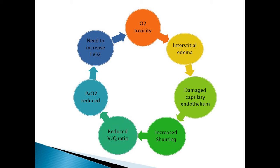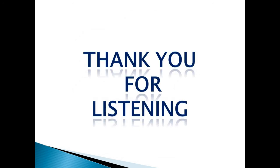Due to the V/Q mismatch, the partial pressure of oxygen (PaO2) is reduced. To compensate, as seen on arterial blood gas (ABG), the FiO2 — the fraction of inspired oxygen — needs to be increased. However, increasing FiO2 again leads to oxygen toxicity and hypoxemia, requiring even more oxygen, creating a vicious cycle.